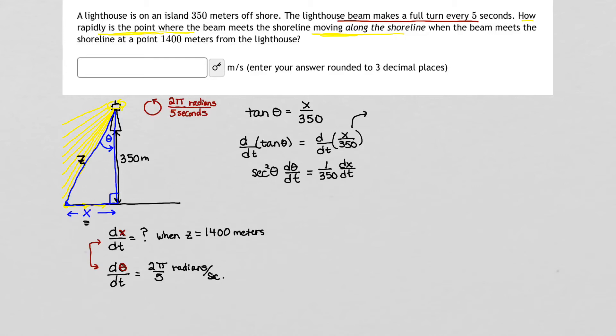I'll write that out. x over 350 can also be viewed as 1 over 350 times x. And so now you see that linear factor 1 right next to the 1 over 350. So when I take the derivative with respect to time, I simply get 1 over 350 dx/dt.